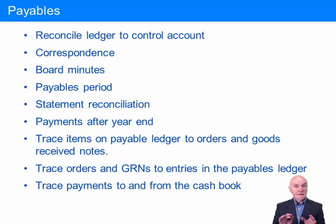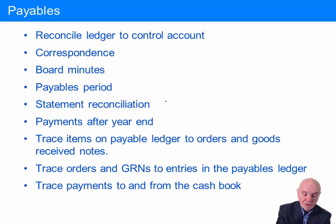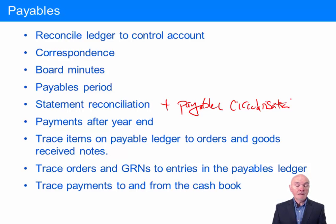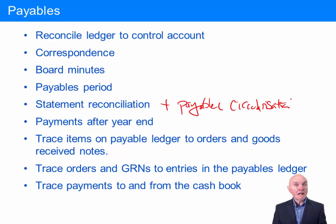The habit differs a little between different countries, but you can also do a payables circularization. Done very much the same way as a receivables circularization — this is where the auditor asks the client to write to suppliers, to people to whom they owe money, and to confirm the amount owing at a particular date. The supplier will then write back directly to the auditor confirming that amount.